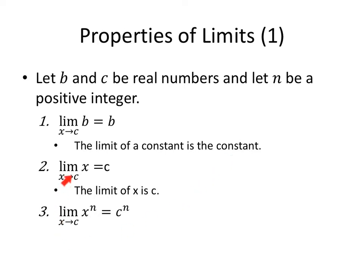Now think about what this limit is saying. As X gets closer and closer to C, what happens to X? It gets closer to C. So the limit of X is C. As X goes to C, X goes to C. And the same is true with the power. So as X approaches C, X to the N becomes C to the N.